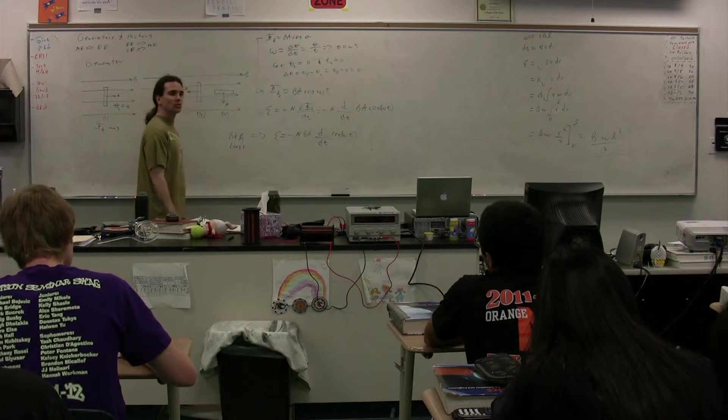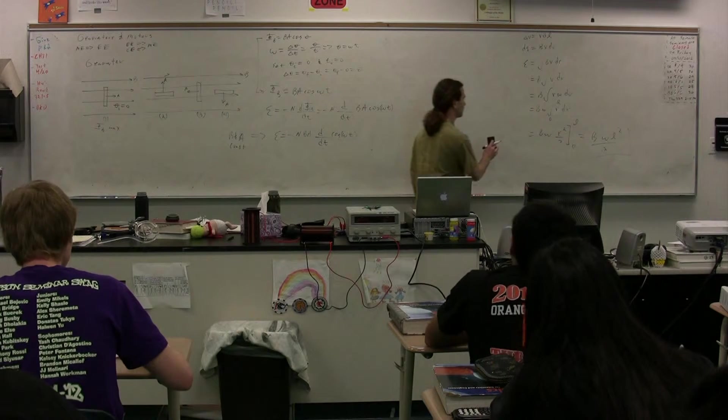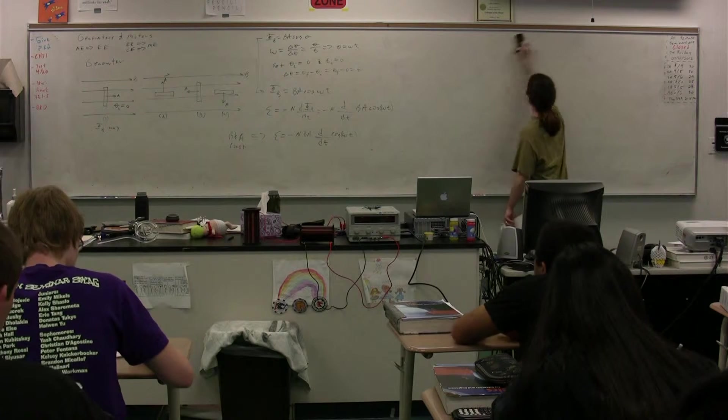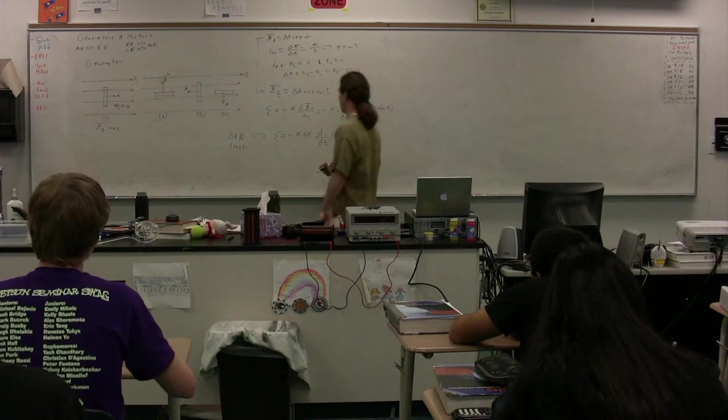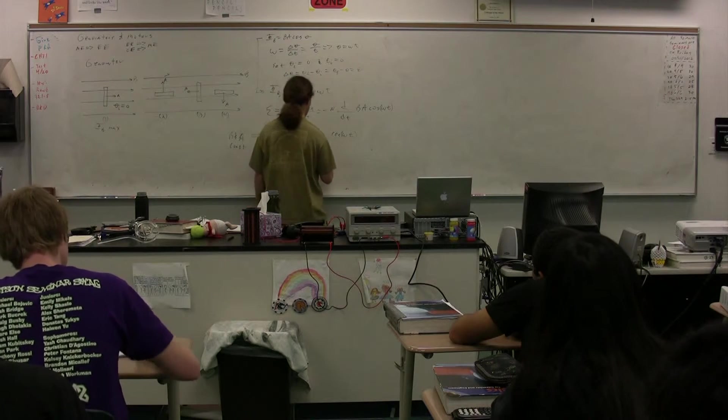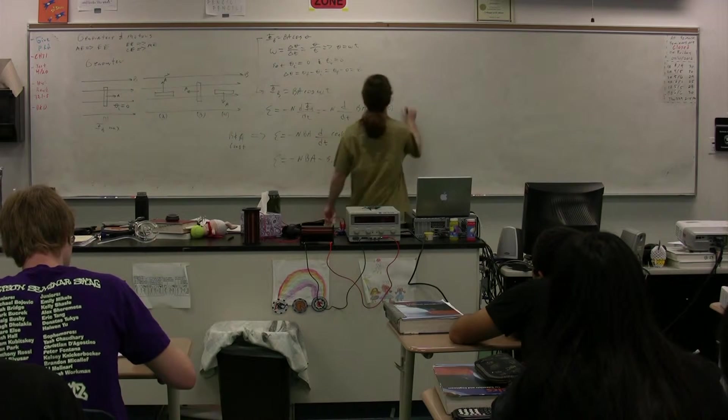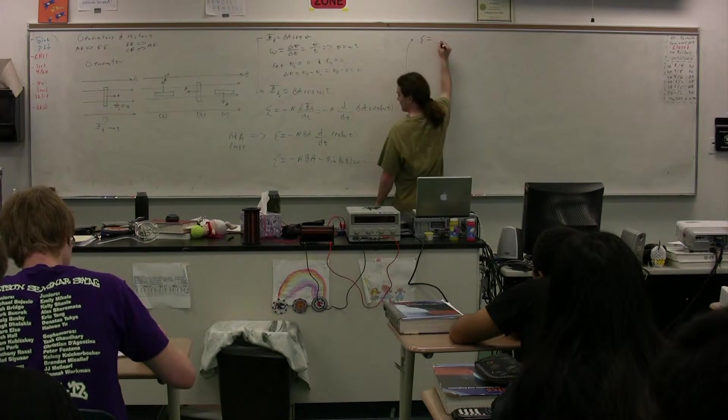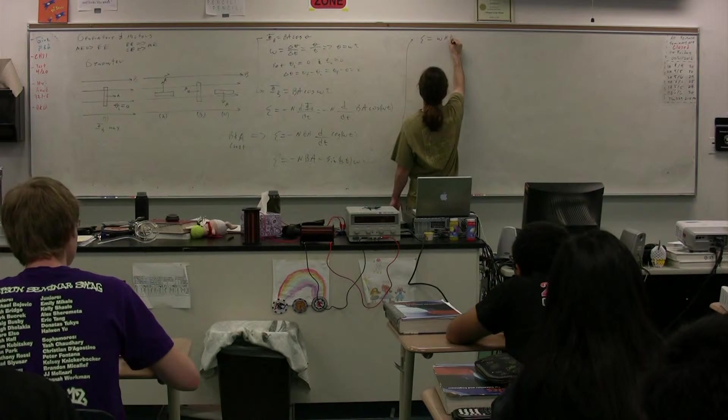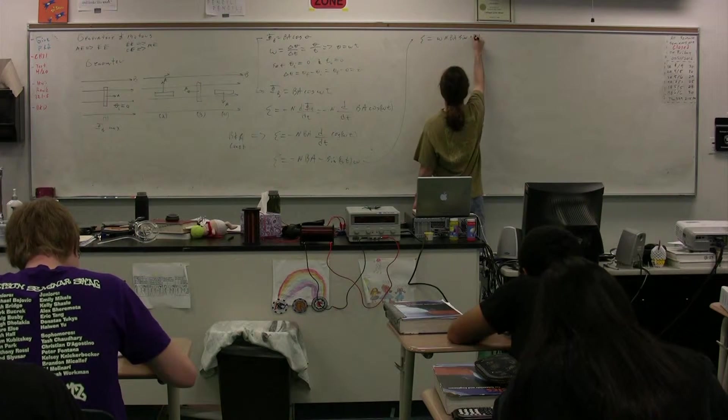Derivative of cosine omega t with respect to time? Negative sine, negative omega sine omega t. Because we have to take the derivative of omega t as well. So we get the EMF is equal to negative n BA times the negative sine omega t, but then you also have the omega. In other words, the EMF is equal to, we have two negatives, so we have omega n BA times the sine of omega t.